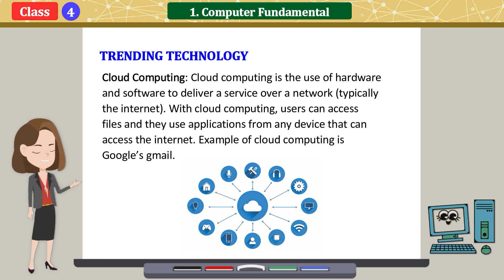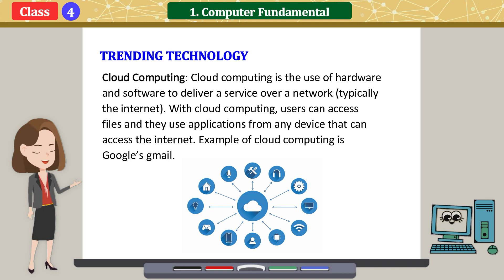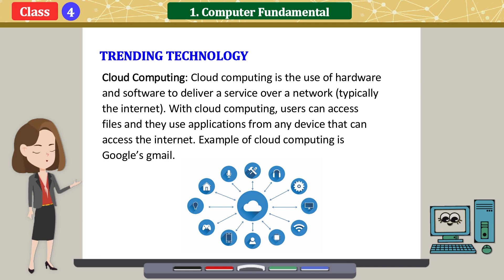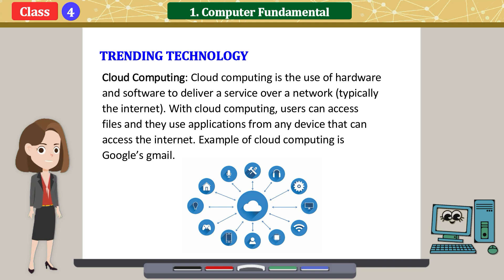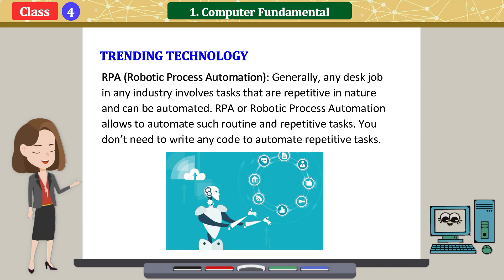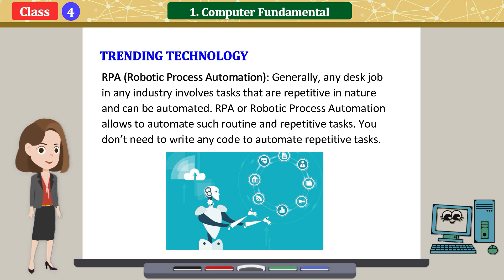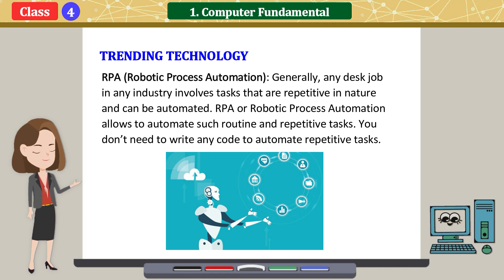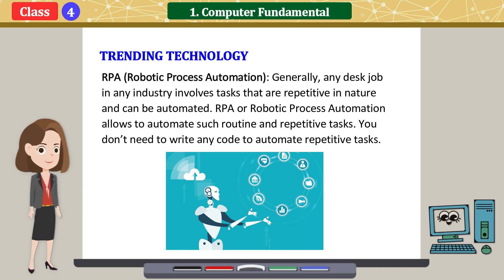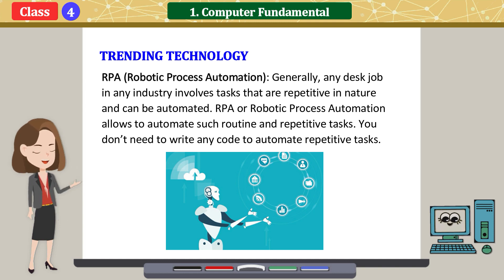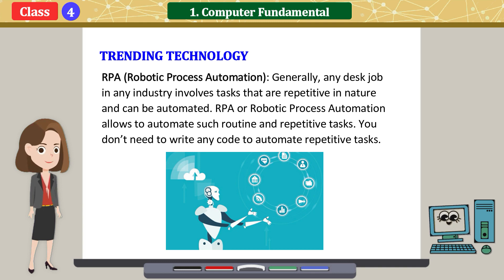Cloud computing: cloud computing is the use of hardware and software to deliver a service over a network. With cloud computing, users can access files and use applications from any device that can access the internet. An example of cloud computing is Google's Gmail. RPA: generally, any desk job in any industry involves tasks that are repetitive in nature and can be automated. RPA, or robotic process automation, allows automation of such routine and repetitive tasks. You don't need to write any code to automate repetitive tasks.